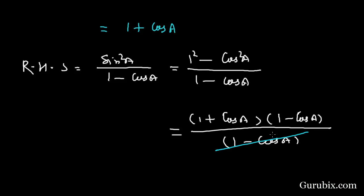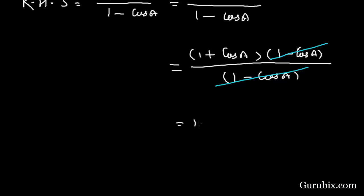We can cancel out (1 - cos A) with (1 - cos A), then we have 1 + cos A. This equals the left hand side, so this is the identity. Thank you.